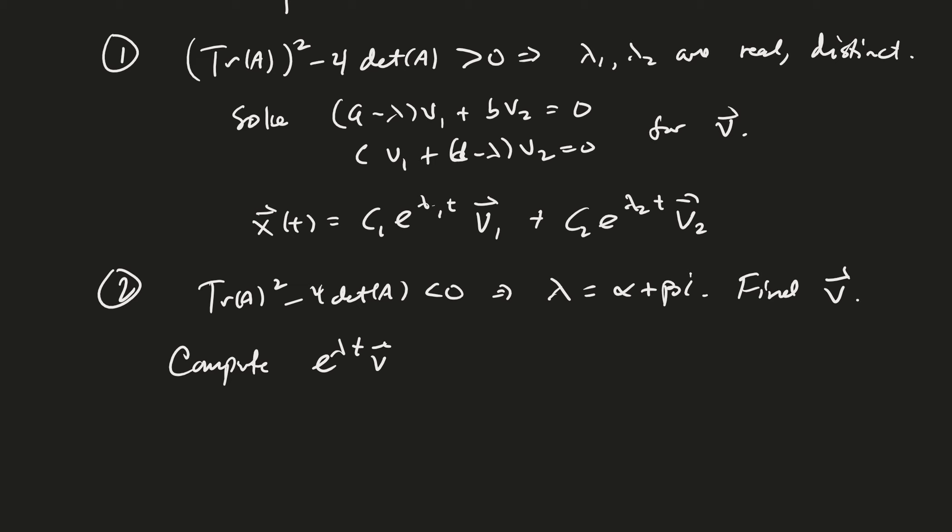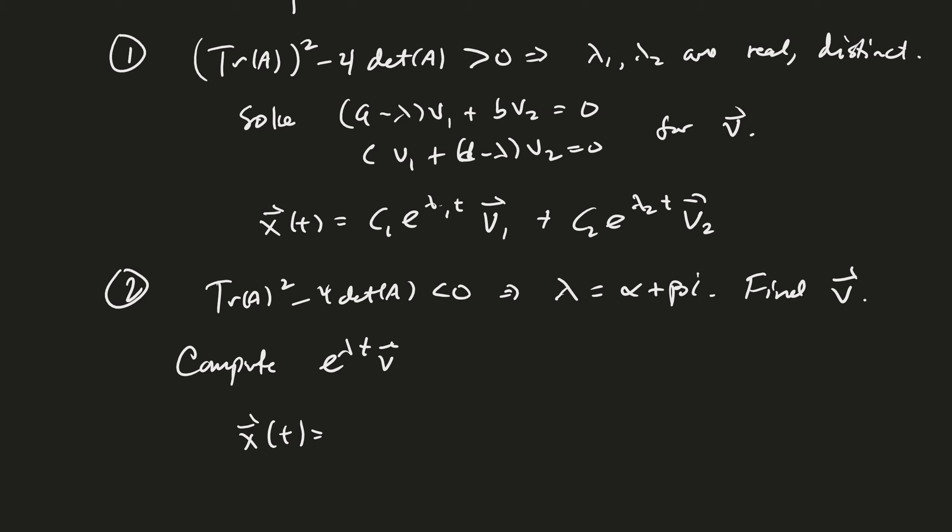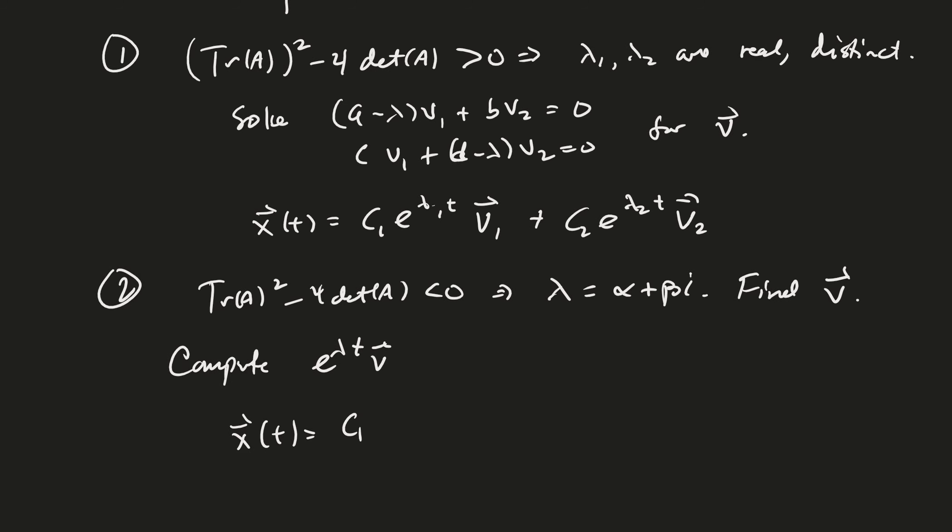Find the eigenvector v. And then compute e to the lambda t times v. That takes a little bit of work, right? And then your solution is going to be c1 times the real part of e to the lambda t times v, plus c2 times the imaginary part of e to the lambda t times v. Good.